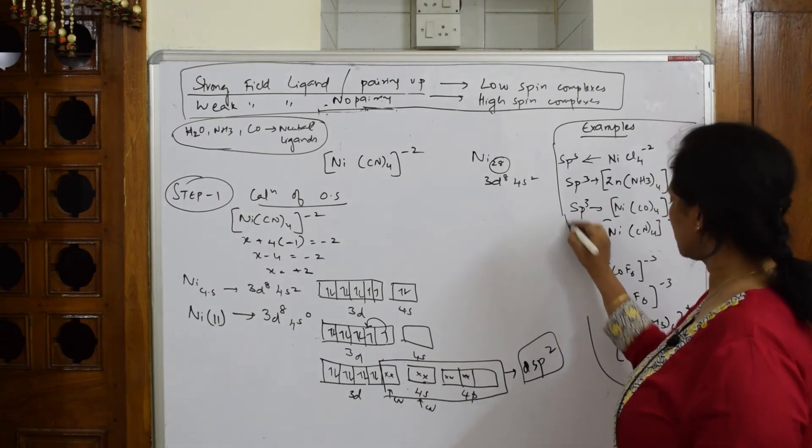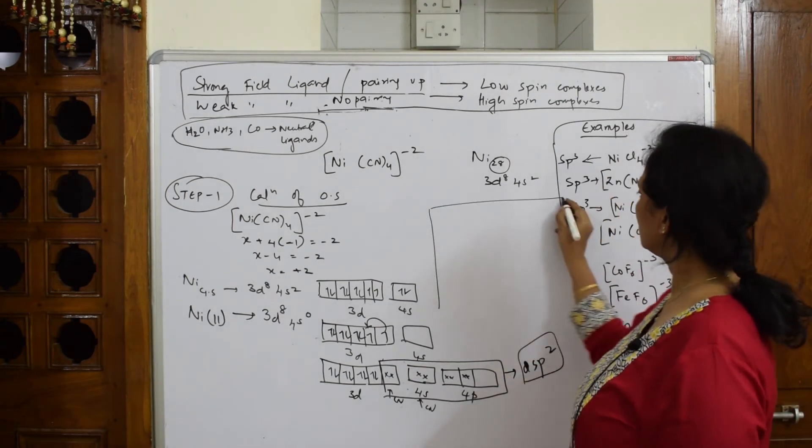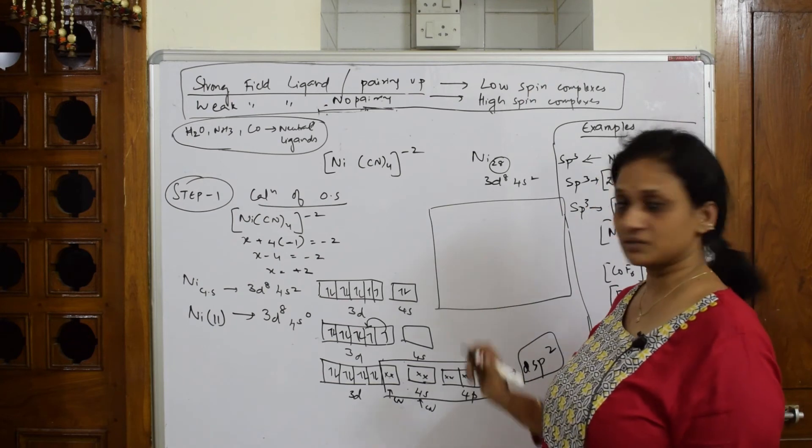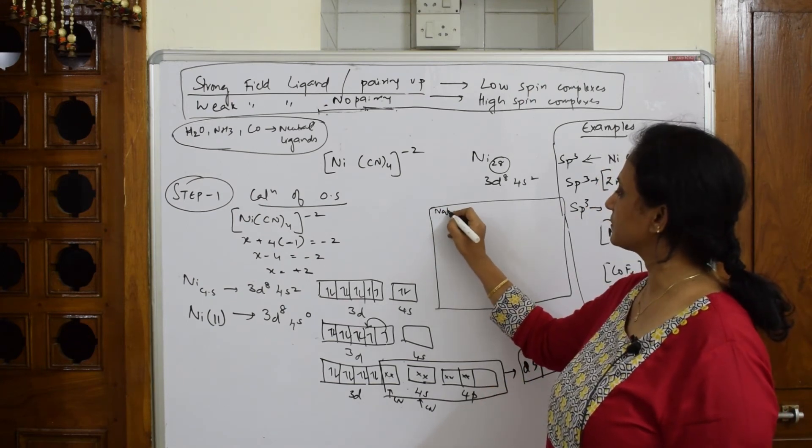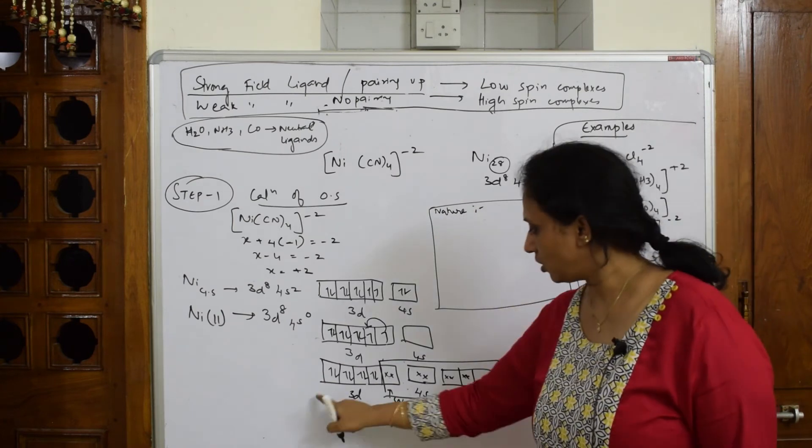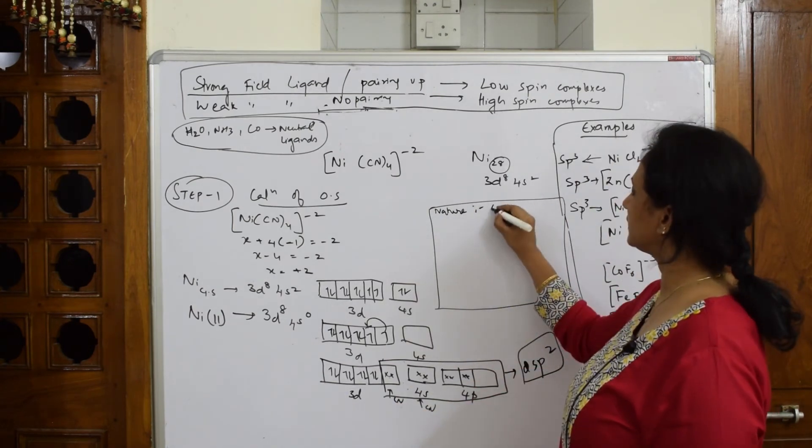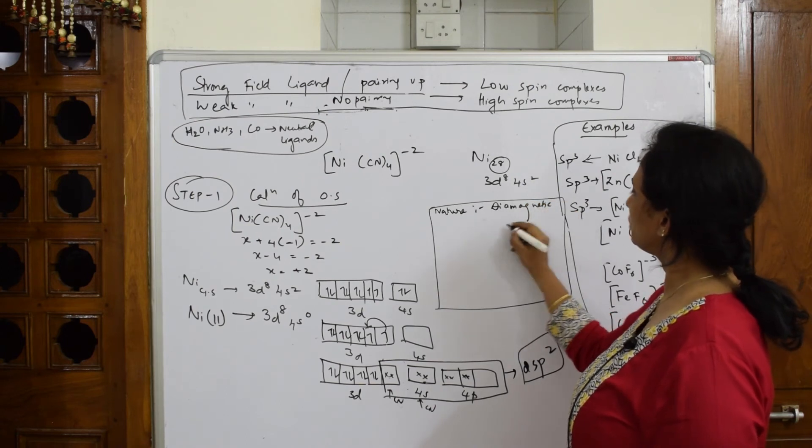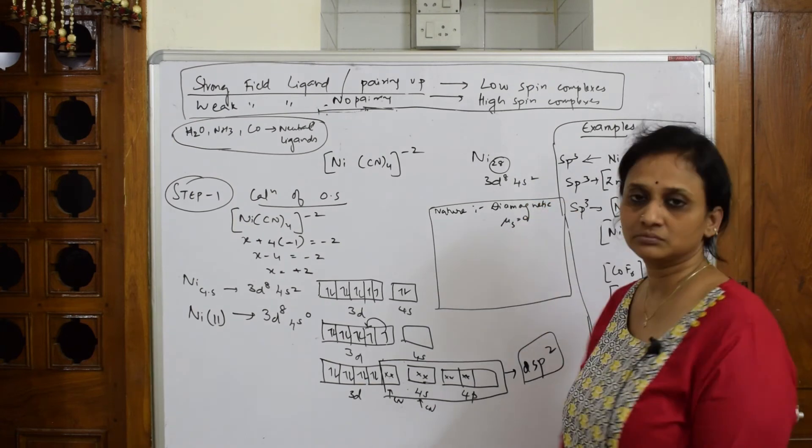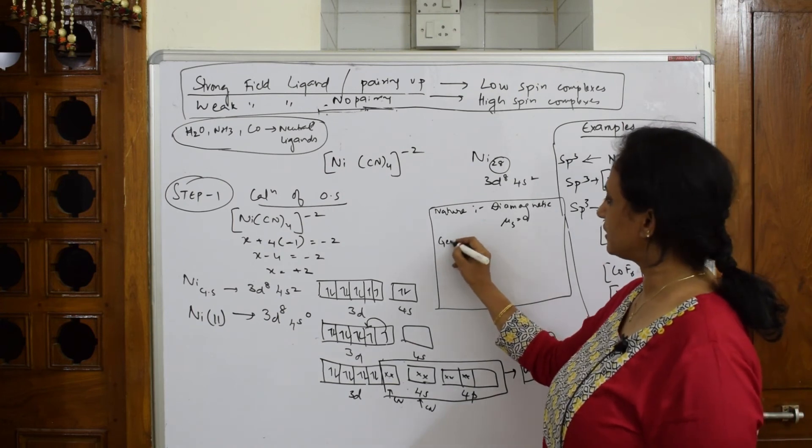I'll erase this and come back to the next one. So finally, I have to finish off the answer with the parameters. What are the parameters? First important thing, I have to write what is the nature. Here all are paired up, so it is diamagnetic. So mu s is zero, no unpaired electrons.